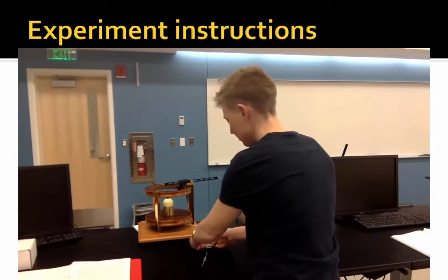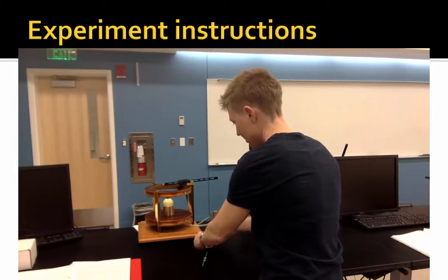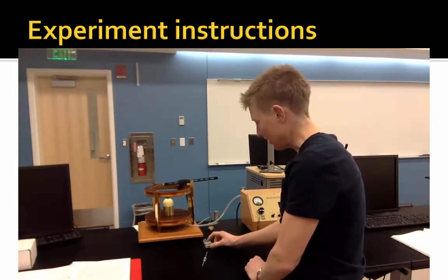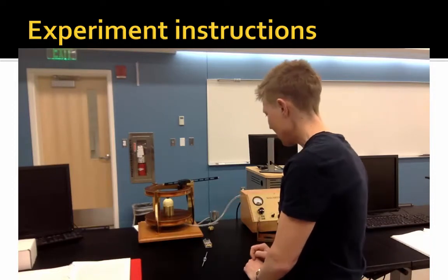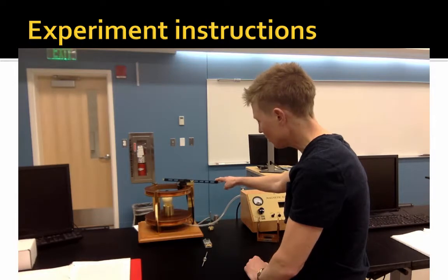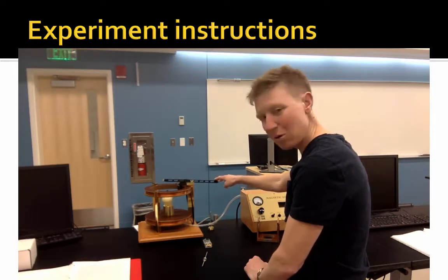So in order to make our object here heavier, we're going to add some little ball bearings. Make that hanging mass heavier. And eventually it will pull the cue ball up.